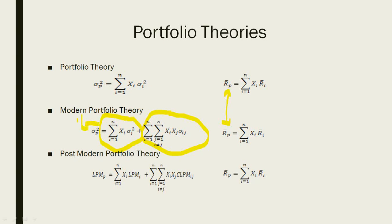Markowitz stated that risk is of two types: diversifiable risk and non-diversifiable risk. Diversifiable risk is also known as unsystematic risk, firm-based risk, or idiosyncratic risk. Non-diversifiable risk is also known as systematic risk or market risk. The market risk cannot be diversified away; however, we can mitigate the diversifiable portion through intelligent diversification.